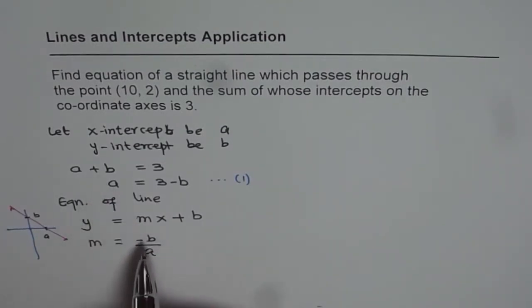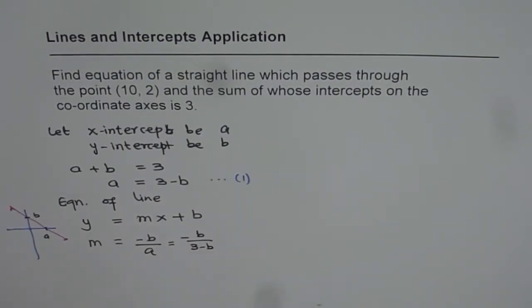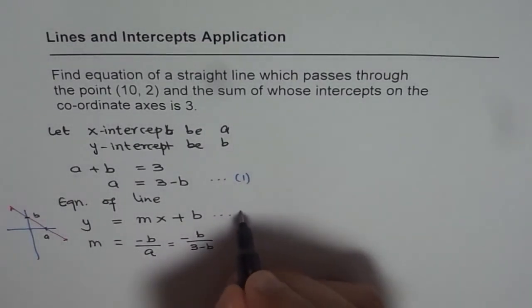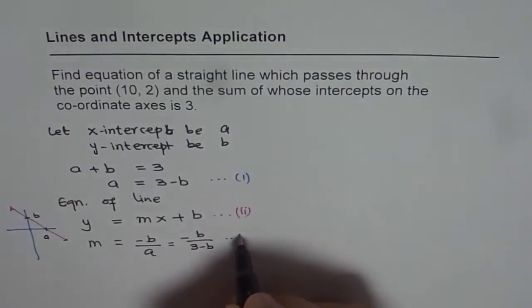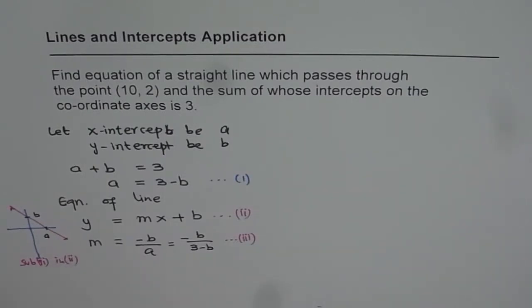In terms of intercepts, that is my slope and since we know A is 3 minus B, I can write this as -B/(3 - B). That becomes the slope. Now, since this is the slope, I can substitute this value of slope in my equation number 2 which is equation for the line. So this is my equation 3. Let me substitute 3 in 2 and see what we get.